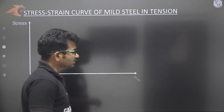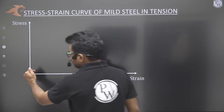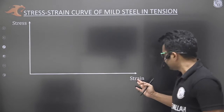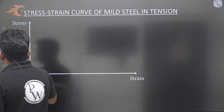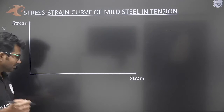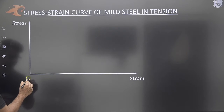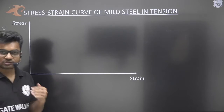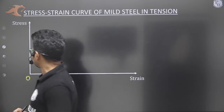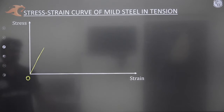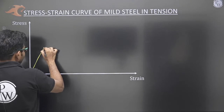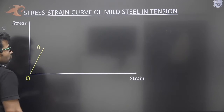When discussing the stress strain curve of mild steel in tension, as we increase the load it can be converted into stress by dividing by the area, and the change in length produces strain. Starting from zero stress and zero strain at the origin, we observe that initially the stress strain curve is linear — a perfect straight line. This linear region continues up to point A.